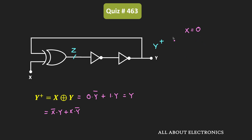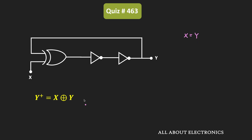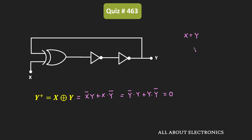Similarly, let's check another condition. Let's assume that the input X is the same as Y. In that case, X XOR Y equals X̄·Y + X·Ȳ. Since both X and Y are equal, we can write this expression as Ȳ·Y + Y·Ȳ, and as you can see, that is equal to 0. So in this case also, the output Y will not change, and the circuit will not work as a clock generator.